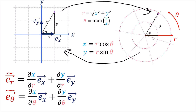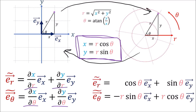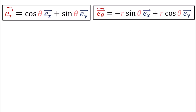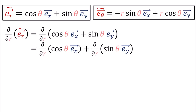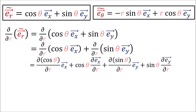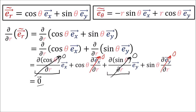Using x = r cos theta and y = r sin theta, we compute all the relevant derivatives to get the polar basis vectors expanded in Cartesian basis vectors. Now we can take the derivatives of the basis vectors in the r direction. Using the product rule and noting that Cartesian basis vectors e_x and e_y are constant everywhere so their derivatives go to zero, and noting that the derivative of e_r with respect to r contains no r variable, we find that the rate of change of the e_r basis vector in the r direction is just the zero vector.